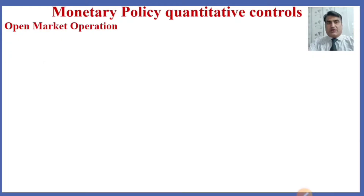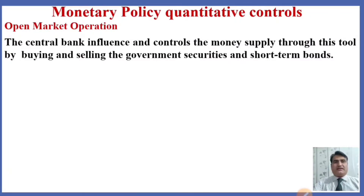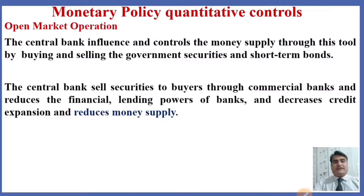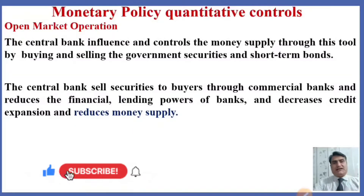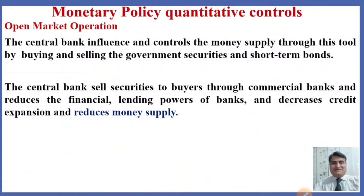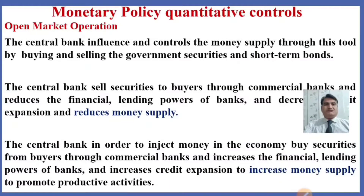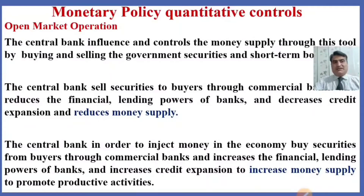What is open market operation? The central bank influences and controls the money supply through this tool by buying and selling government securities and short-term bonds. The central bank sells securities through commercial banks, reducing their financial lending power and decreasing credit expansion and money supply. To inject more money, the central bank buys securities through commercial banks, increasing their lending power and credit expansion to promote productive activities.